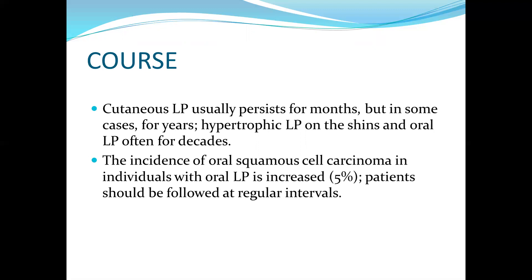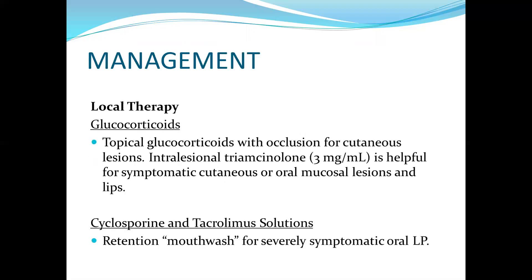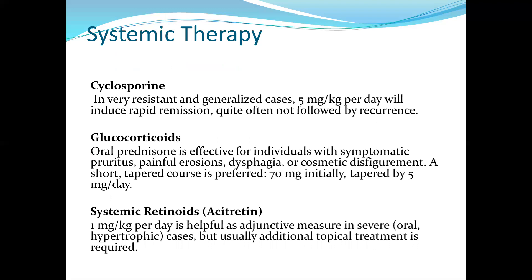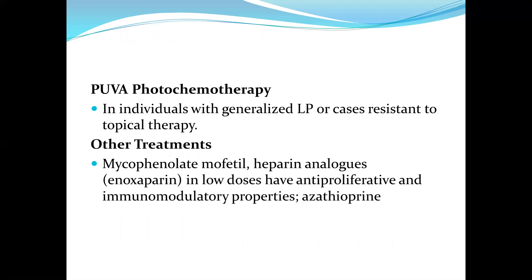Management — local therapy: topical glucocorticoids with occlusion for cutaneous lesions; cyclosporine and tacrolimus solutions as a retention mouthwash for severely symptomatic oral lichen planus. Systemic therapy: cyclosporine in very resistant and generalized cases at 5 mg/kg/day will induce rapid remission, though often followed by recurrence. Oral prednisolone is effective for individuals with symptomatic pruritus, painful erosions, dysphagia, or cosmetic disfigurement. Systemic retinoic acid at 1 mg/kg/day is helpful as an adjunctive measure in severe cases, but usually additional topical treatment is required. PUVA photochemotherapy is done in individuals with generalized lichen planus or cases resistant to topical therapy.